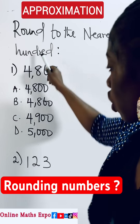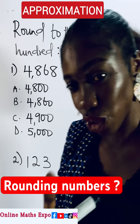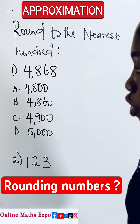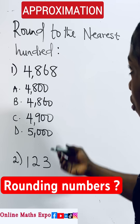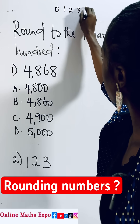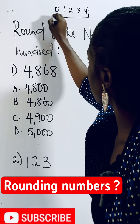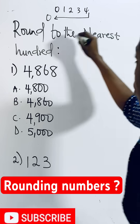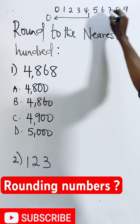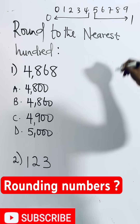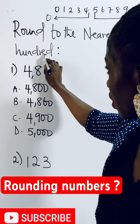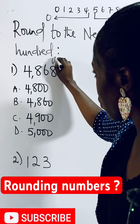Round to the nearest hundred — it's easy. These are the numbers. Just remember your rule of rounding: when you have zero, one, two, three, or four, you round it down to zero. When you have five, six, seven, eight, or nine, you round it up as one. Now when you talk about the nearest hundred place value...